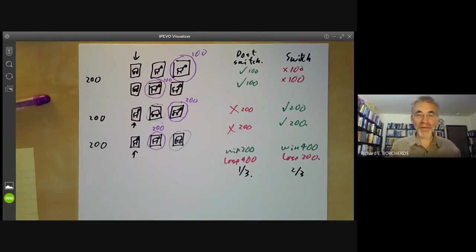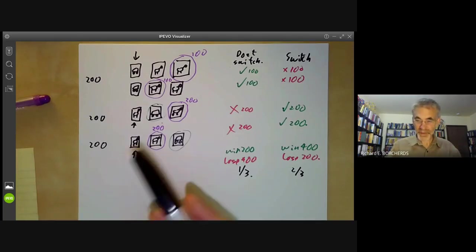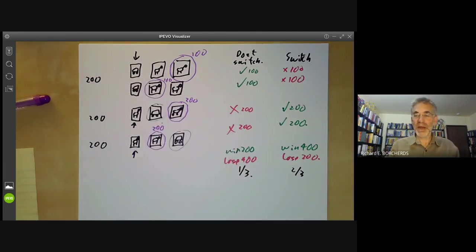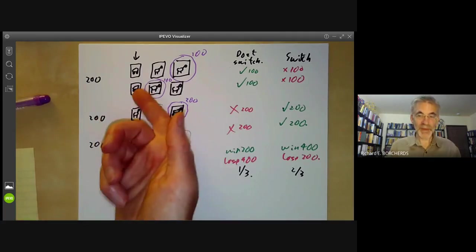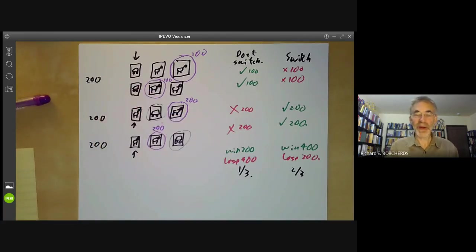The only method that I've found that ever actually convinces people is to offer to gamble with them with this problem. So you can play this game with people a lot of times. So you will choose where the car goes and open a goat door. And I will try and guess where the car is. And if I get the car, I win $100. And if I get a goat, I pay you $110. So if you believe it doesn't make any difference whether I switch or not, you should be willing to play this game with me. And I will be very, very happy to play this game with you. And after playing it a few times, you will notice that you're losing lots of money. So if you find someone who doesn't believe this solution, just offer to play them for money and you will make a lot of money before they catch on.